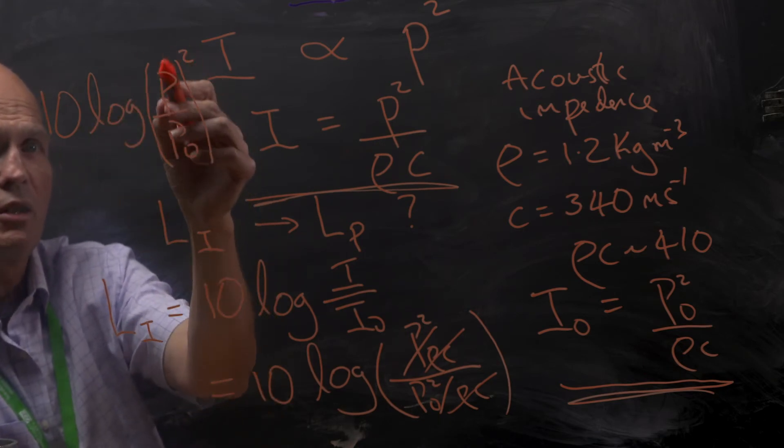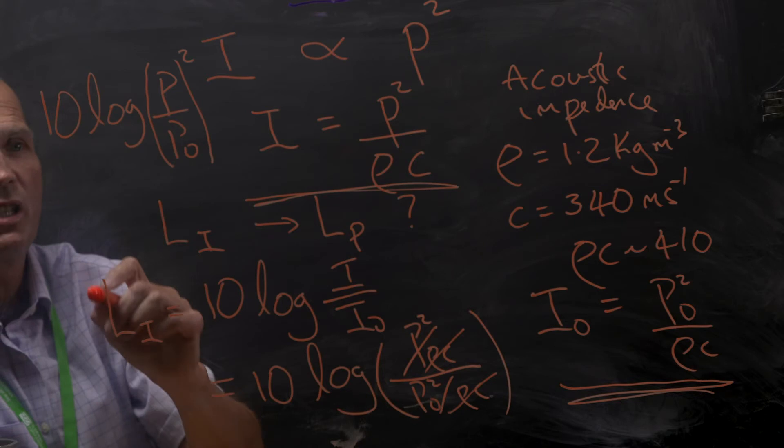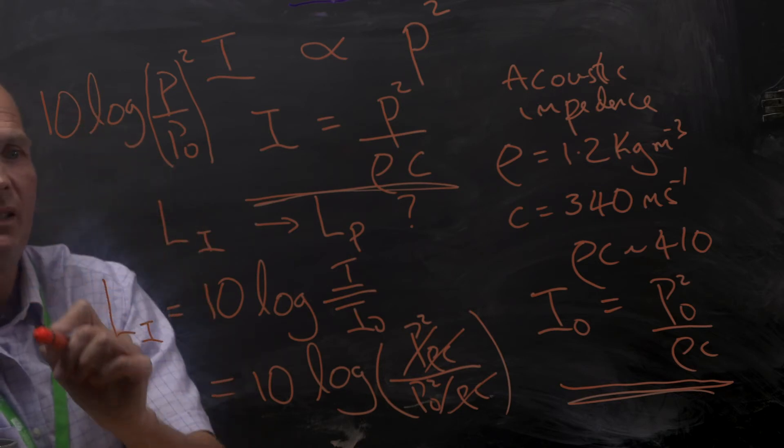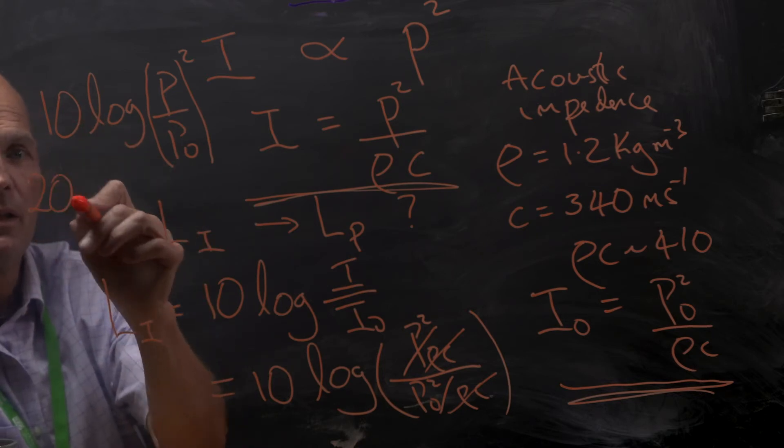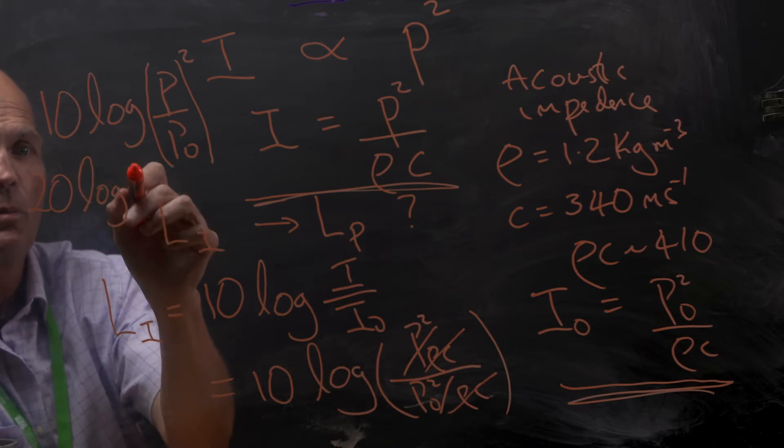Using the rules of logs, we can take the two down to the front here, so it becomes 2 times 10, which is equal to 20. So this gives you 20 log P over P naught.